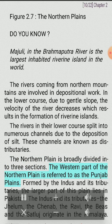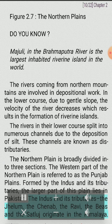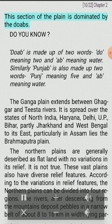The northern plain is broadly divided into three sections. The western part is referred to as the Punjab plains, formed by the Indus and its tributaries, with the larger part of this plain lying in Pakistan. The Indus and its tributaries — the Jhelum, the Chenab, the Ravi, the Beas and the Satluj — originate in the Himalaya. This section of the plain is dominated by the doabs. The Ganga plain extends between the Ghaggar and Tista rivers, spread over the states of Haryana, Delhi, U.P., Bihar, and partly Jharkhand and West Bengal. To its east, particularly in Assam, lies the Brahmaputra plain.